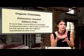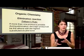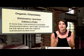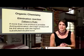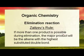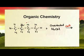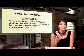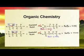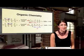Zaitsev's rule applies to elimination reactions involving an asymmetrical molecule, where the double bond can form in more than one position. The rule states: the major product is the alkene with the most highly substituted double bond. In the example, the bromide and a hydrogen can be removed to give a double bond between C1–C2 (but-1-ene) or C2–C3 (but-2-ene). But-2-ene has the highest substituted double bond and is therefore the major product; but-1-ene is the minor product.